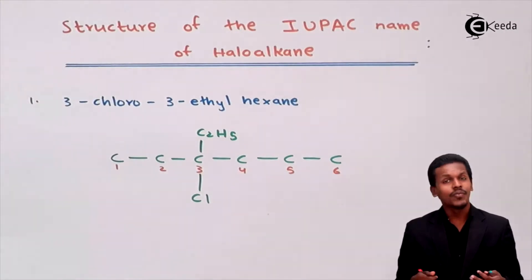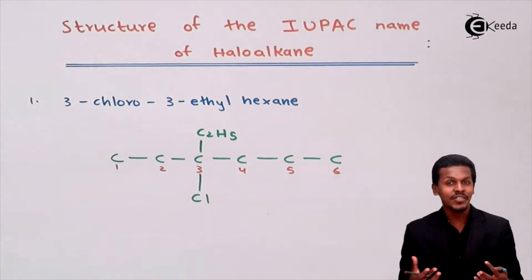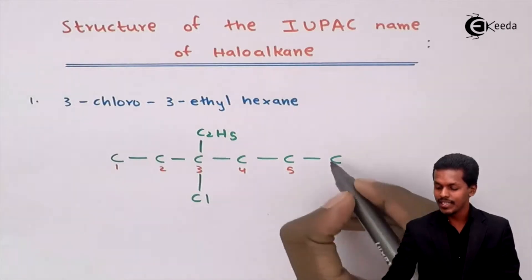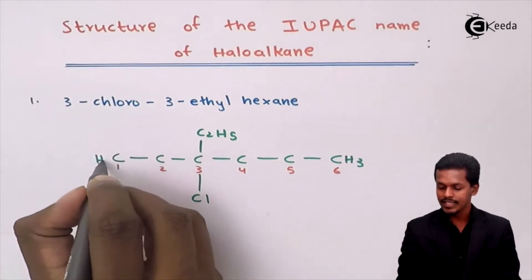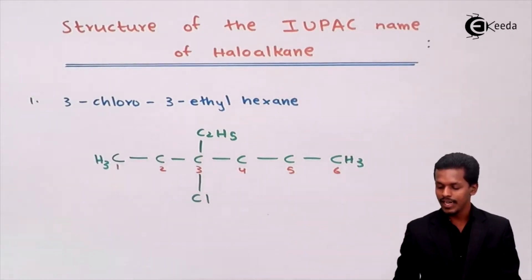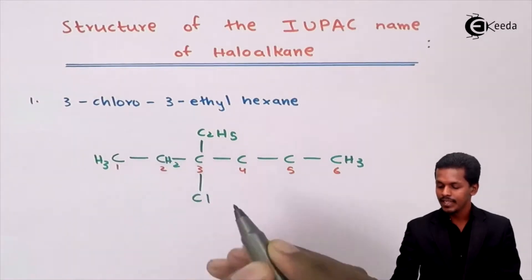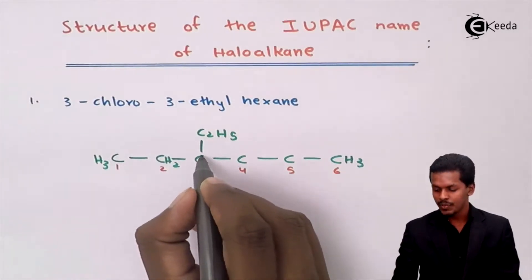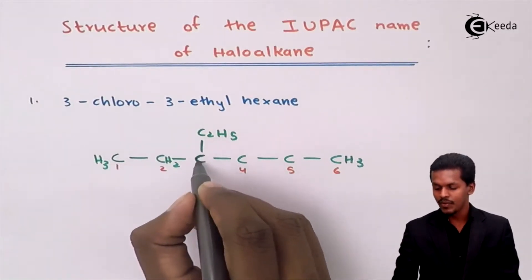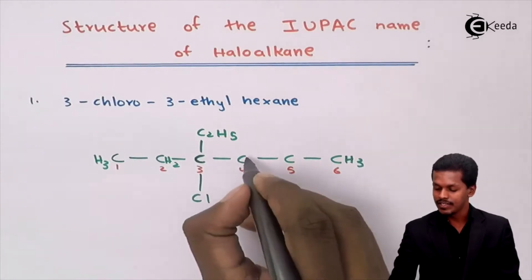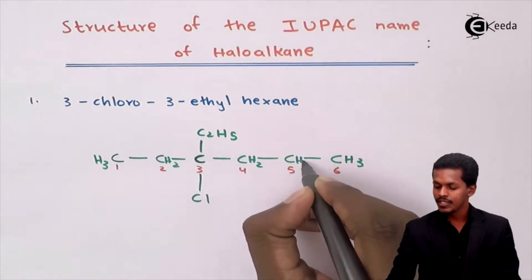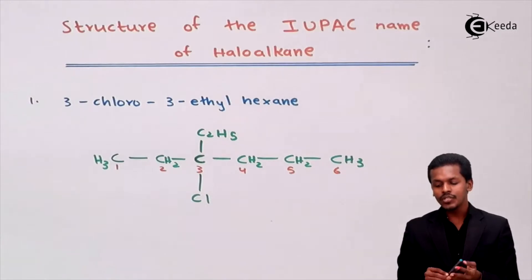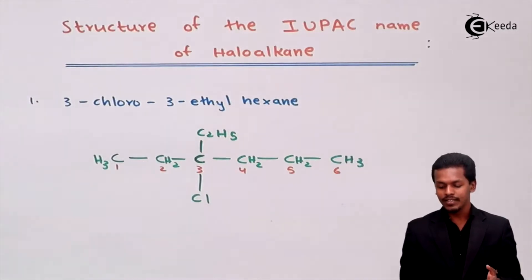Now let us fulfill the hydrogen atoms to satisfy the valency of each carbon. Carbon 1 is CH3, carbon 2 is CH3, carbon 3 has no hydrogen because its valency is fulfilled by chlorine, ethyl, and two chain carbons. Carbon 4 is CH2, carbon 5 is CH2, and carbon 6 is CH2. This is the complete structure of 3-chloro-3-ethyl-hexane.